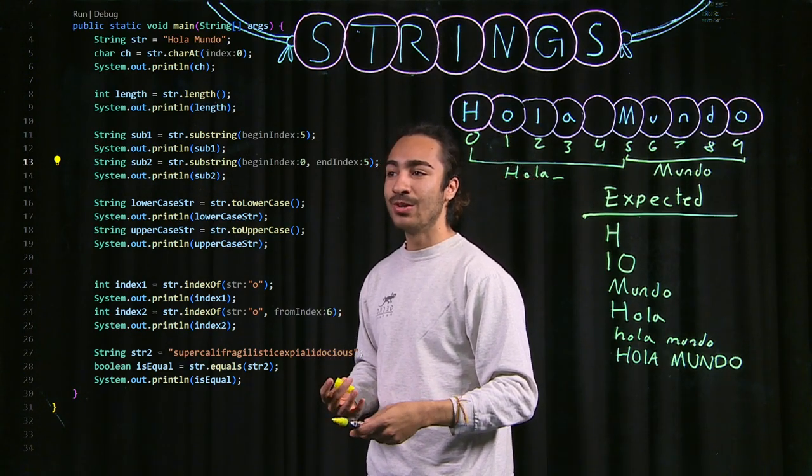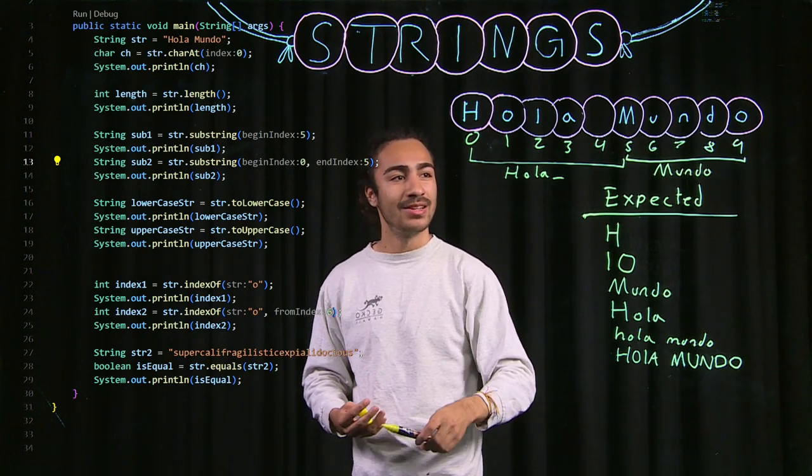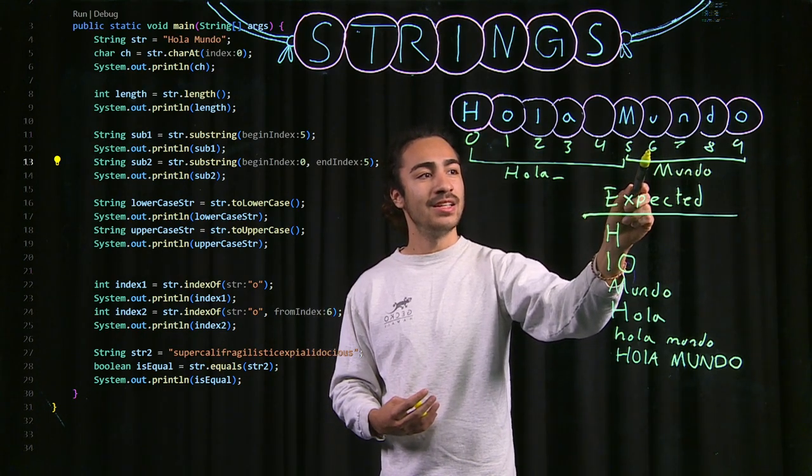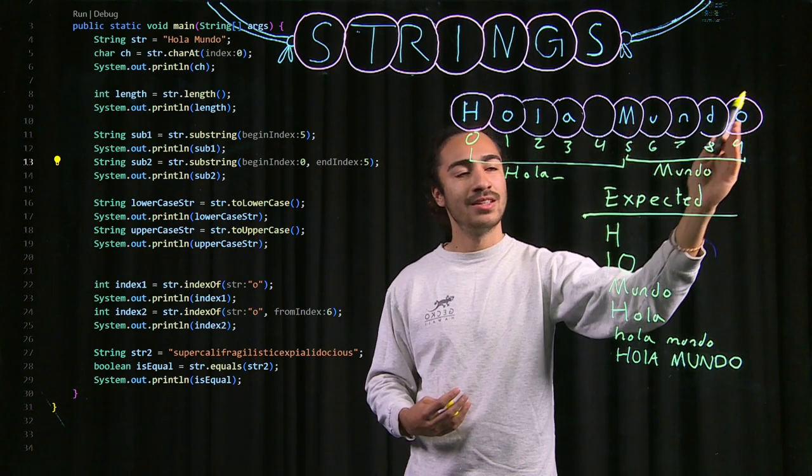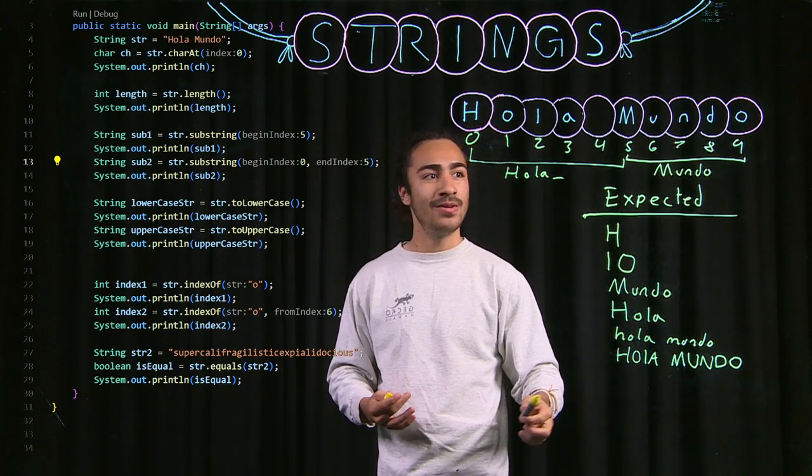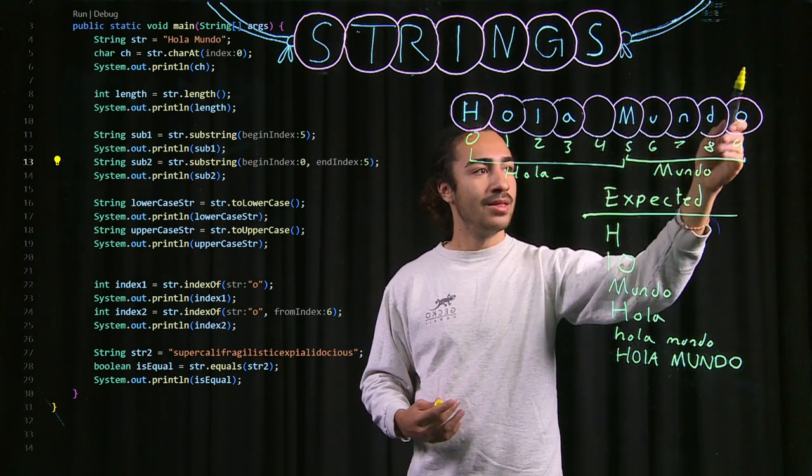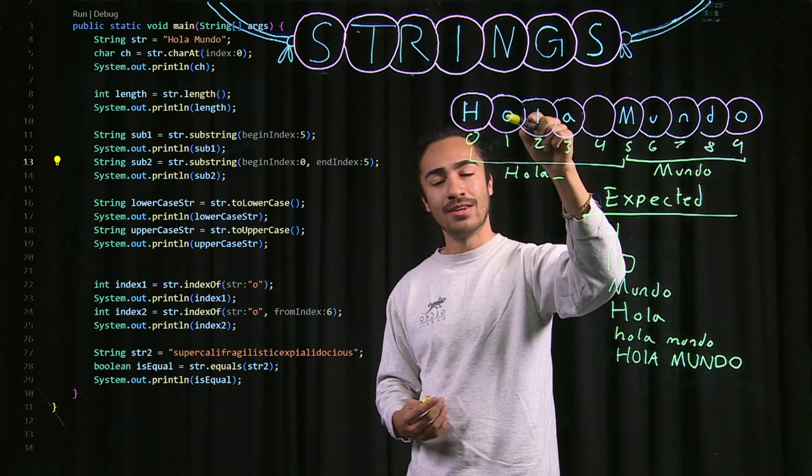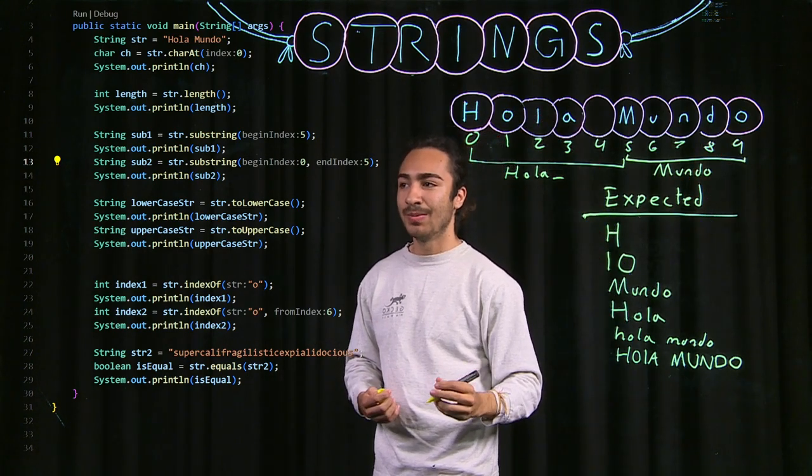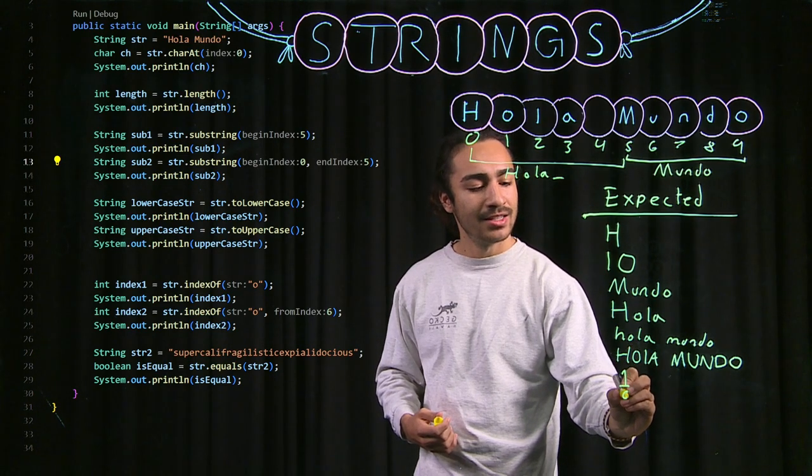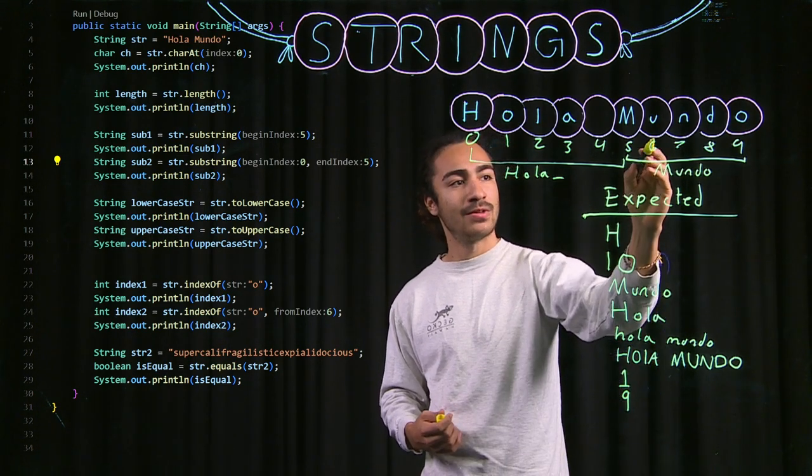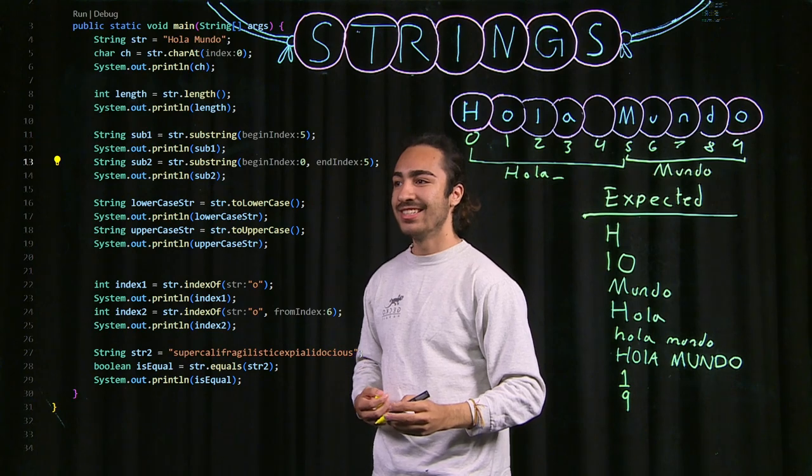However, there's a second version of this where you could give it a starting point. Let's say I give it a starting point of 6. It will only search from that index or that bead onwards. If I give it 6 and an O, it will give me the O here instead of the O here. Our expected output for that one would be 1, because it's the first occurrence, and then 9, because it's the first occurrence after the index 6.